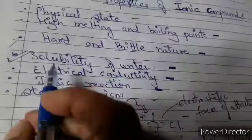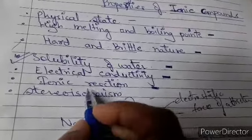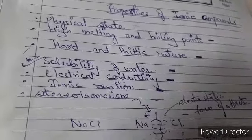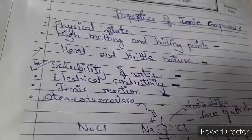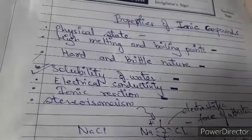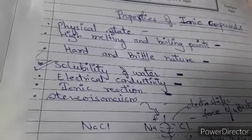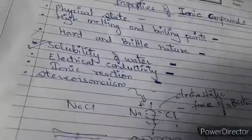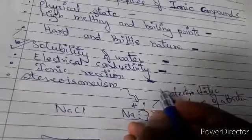Now, electrical conductivity and other properties: stereoisomerism and ionic reactions. Stereoisomerism is related to isomerism. Ionic bonds do not show stereoisomerism because they are neither rigid nor directional. For ionic reactions, since ions are the constituents of ionic compounds, the reactions they undergo are ionic in nature.